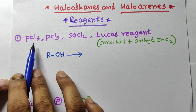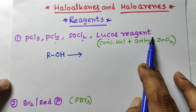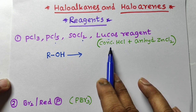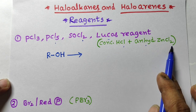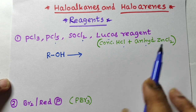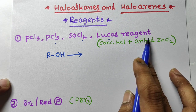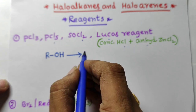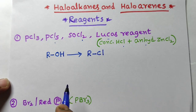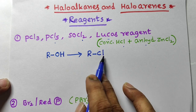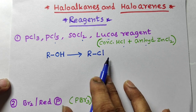First reagents: PCl3, PCl5, SOCl2 (thionyl chloride), and Lucas reagent — an equimolar mixture of concentrated HCl and anhydrous ZnCl2. The purpose of these four reagents is they convert alcohol into alkyl chloride. Your OH group is replaced by chlorine; alcohol is converted into alkyl halide.